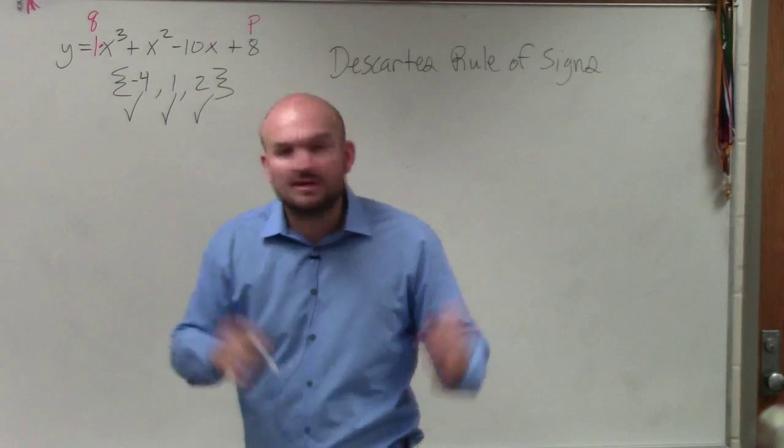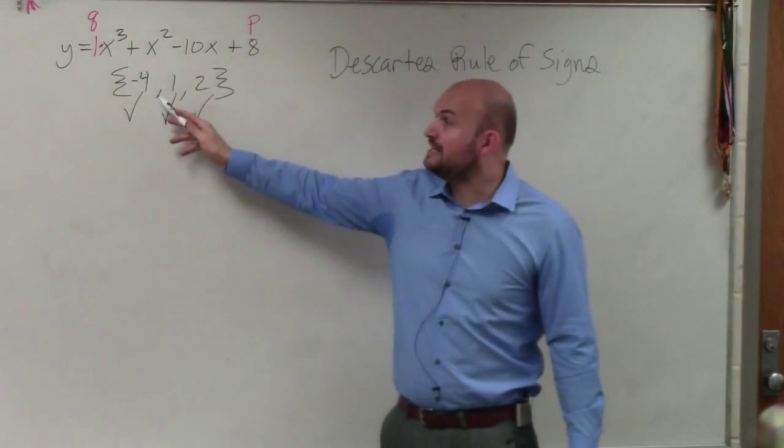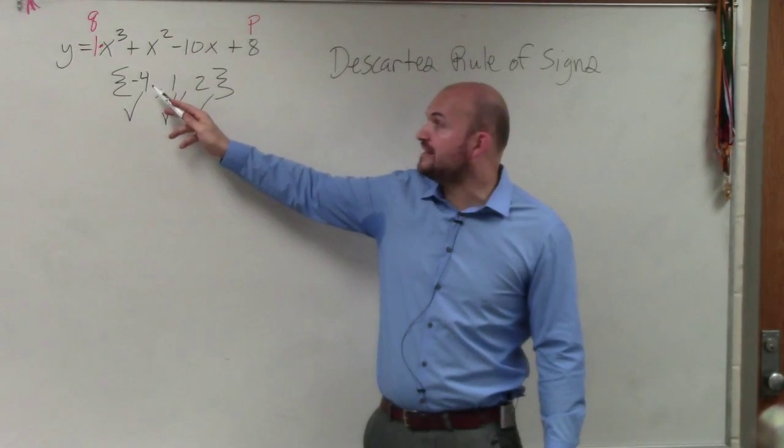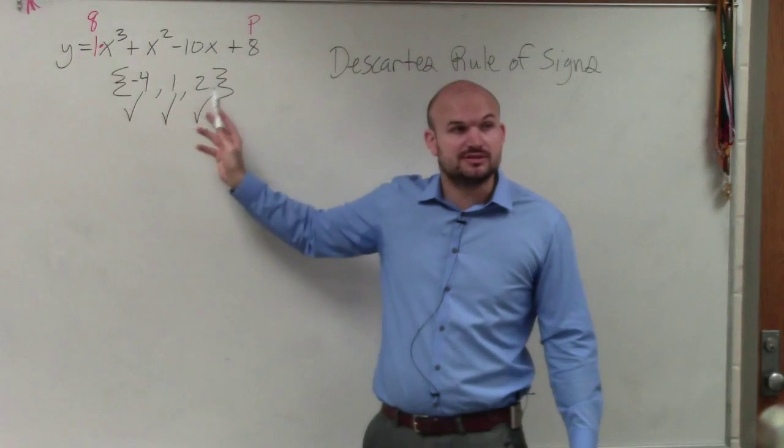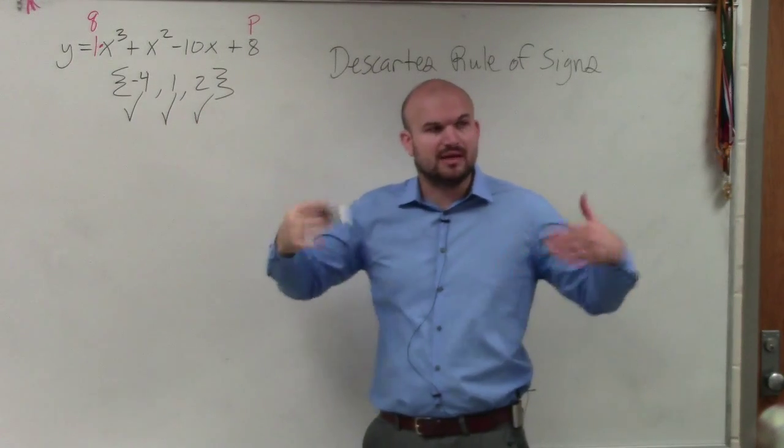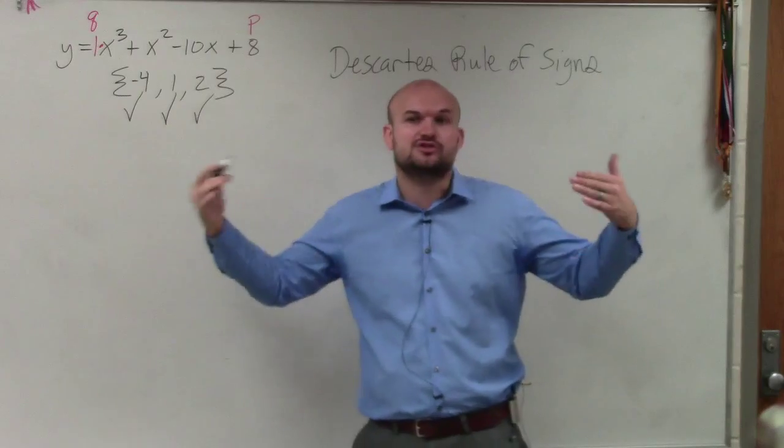That just means they're not x-intercepts, correct? Remember they have i's and stuff with them? Now, in this example, we know that there are three real solutions, correct? So we know there's no complex, but let me show you how we can use Descartes' rule of signs to show that.